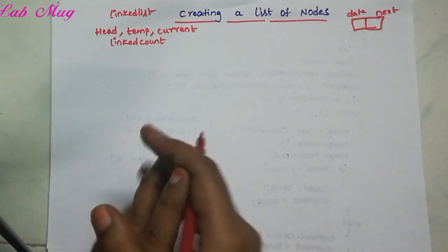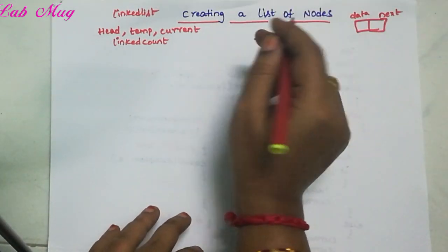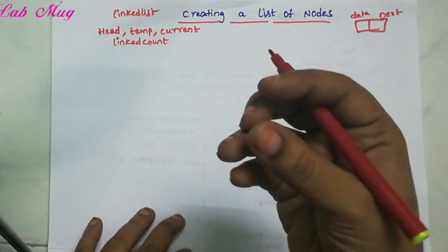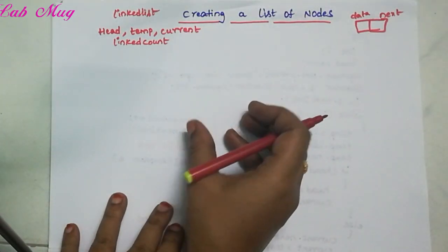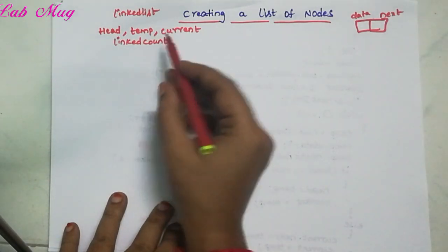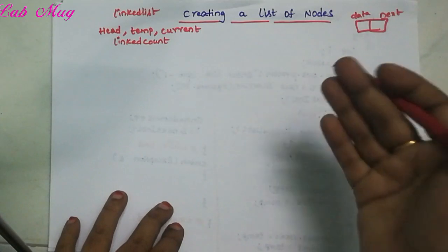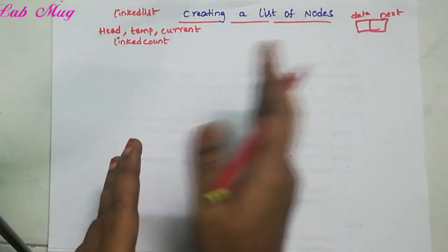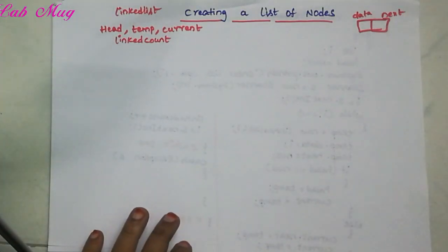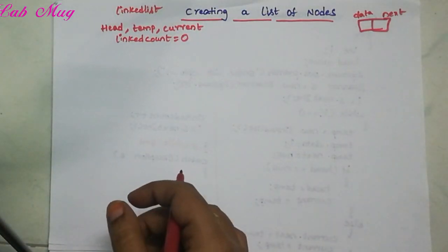So we use the head variable. Why do we use this variable? When we use the linked list concept, for the first node created, that node's address is stored in head. We use the head pointer for every node creation. If we already have three nodes and we create another node, that new node is referenced by temp. Head stores the first node address. Current is used for moving through the nodes. By default, linkedCount is initialized to zero.